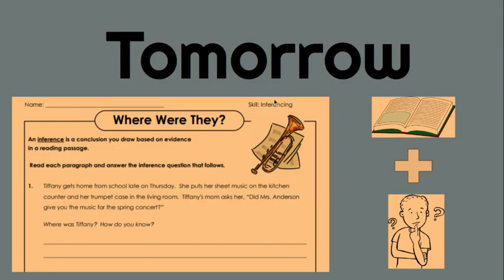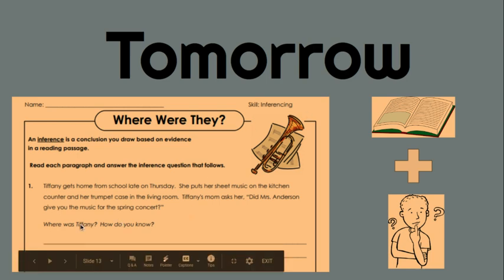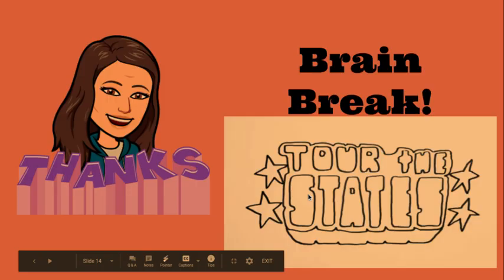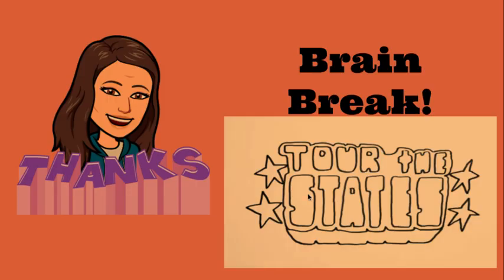Nice job, guys. Thanks for hanging with me. So today we made inferences and also explained how we know the inference was correct — we talked about text evidence and using our background knowledge. Tomorrow you're going to read a paragraph and answer inference questions. There'll be a question like 'Where was Tiffany?' and then an important part: 'How do you know?' — using text plus your background knowledge. Thanks for your hard work today. Click on the link in the description for a brain break and have a wonderful day.